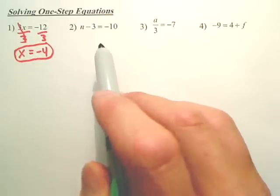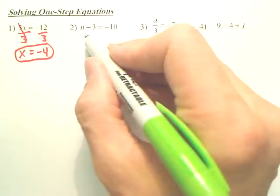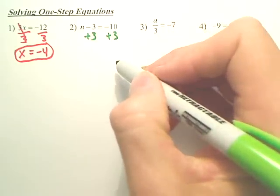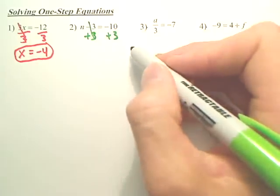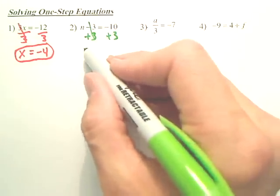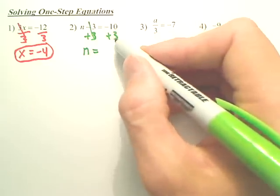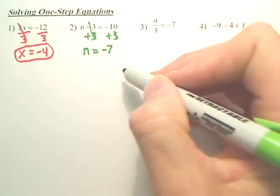What's the opposite of minus 3? Add 3. So if I sit here and add 3 to both sides, that cancels. You have to do it to both sides. Leave me just n. And negative 10 and positive 3 is negative 7, which was the answer we said.